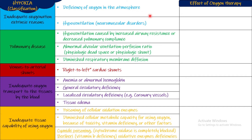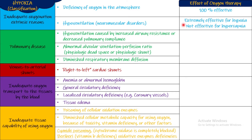Air contains only 21% oxygen. If we give a patient 100% oxygen to breathe — through a cannula, mask, or other methods — will it make a difference? In the first case of deficiency of oxygen in the atmosphere, giving 100% oxygen will be 100% effective because the problem itself is insufficient oxygen. Normal is 21%, and we are giving 100%, so this will be highly effective. For hypoventilation due to neuromuscular disorder — the air is outside but the patient cannot bring it in — giving 100% oxygen is extremely effective for hypoxia.